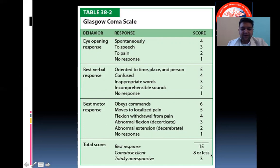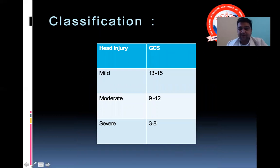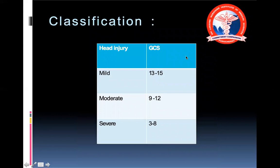A score of eight or less is that of a comatose patient. As per GCS classification, a mild injury is in a patient with a GCS between 13 and 15. A moderate injury is between 9 and 12, and a severe injury is between 3 and 8.